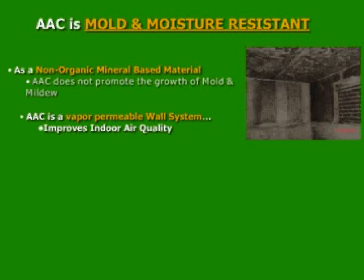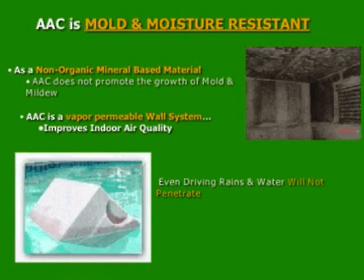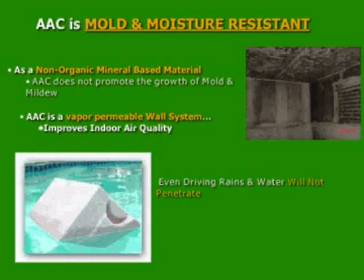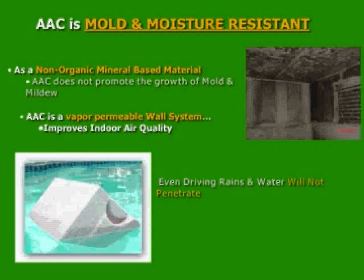AAC is a vapor-permeable system, so any moisture in the room can travel safely throughout the wall and escape, while water molecules, which are far larger, cannot travel throughout the material. The correct moisture content in the room should be between 40% and 60%, which AAC can easily assure.